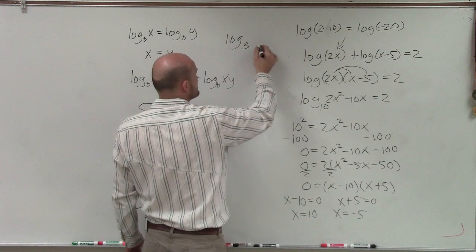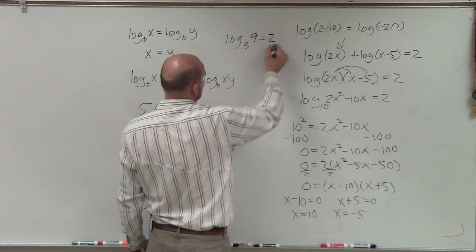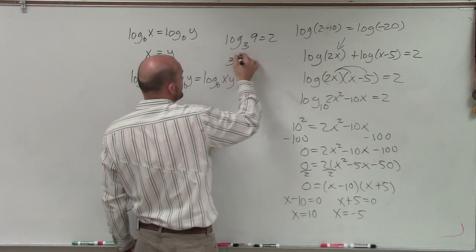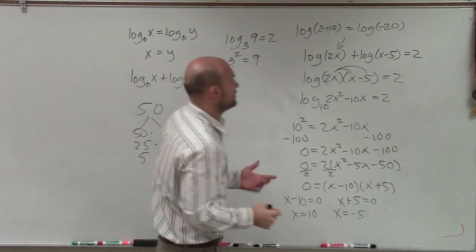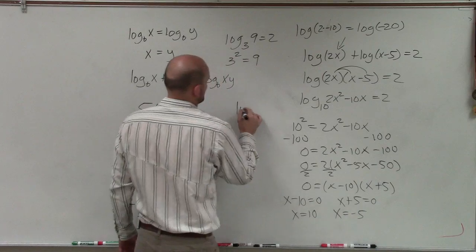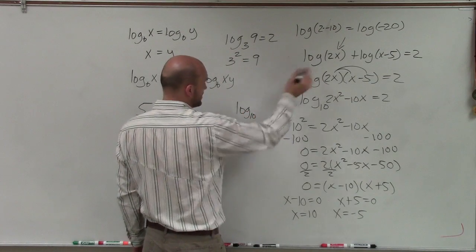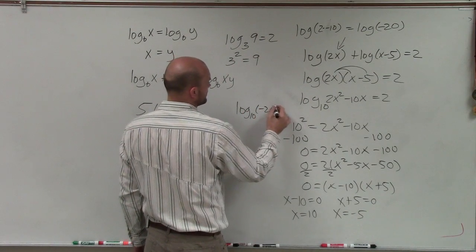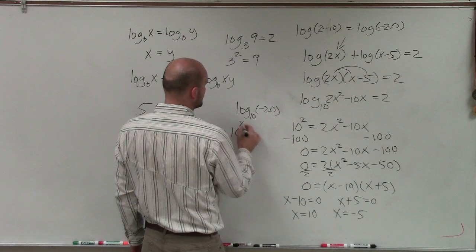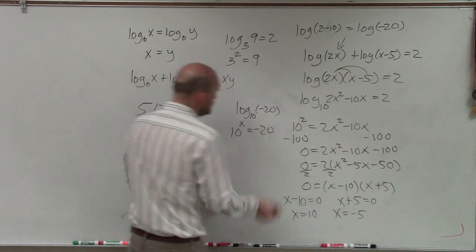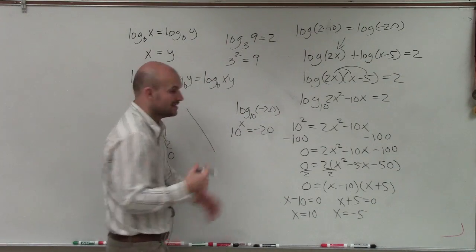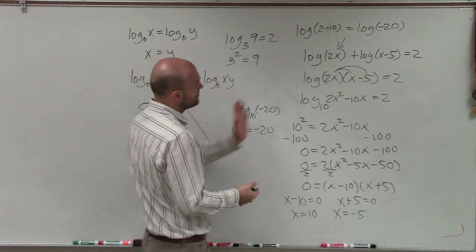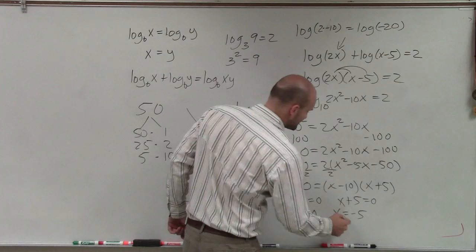If I have log base 3 of 9 equals 2, what that says is 3 raised to the second power equals 9. Well, if I have this log base 10 of negative 20, what that's saying is 10 raised to what power equals negative 20? You can't take a positive number, raise it to another number, and get a negative number. So therefore, this is going to be an extraneous solution.